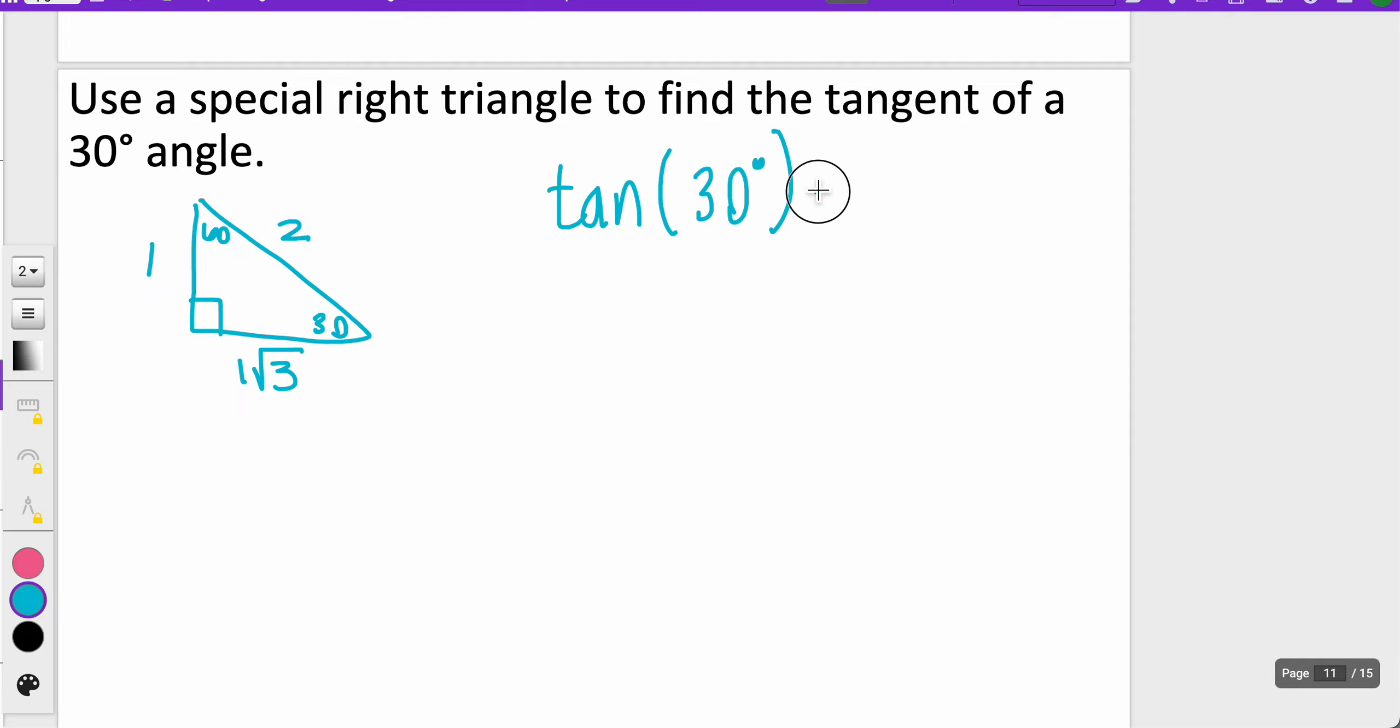The tangent of 30 degrees can be opposite, which is the number 1, over adjacent, which is square root 3. And then to find what this answer is, I need to get rid of that radical on the bottom. So I'm going to multiply both bottom and top by square root 3. That's going to end up being square root 3 on the top over 3. And then I'll just calculate that in my calculator. I'm going to get 0.5773.